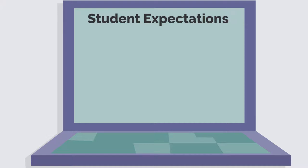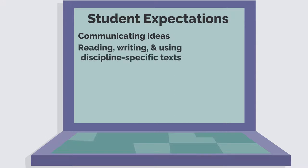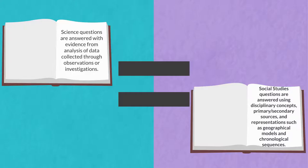For example, student expectations in science and social studies focus on communicating ideas through oral and written language, reading, writing, and using discipline-specific texts, as well as explaining, arguing, discussing, asking, and describing.